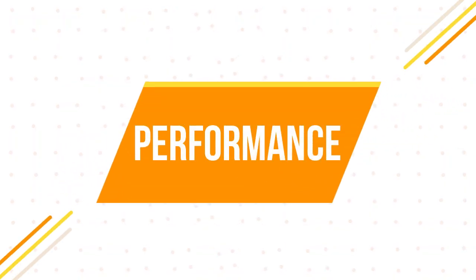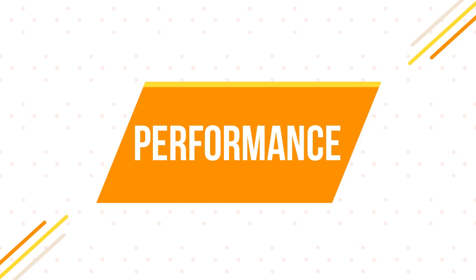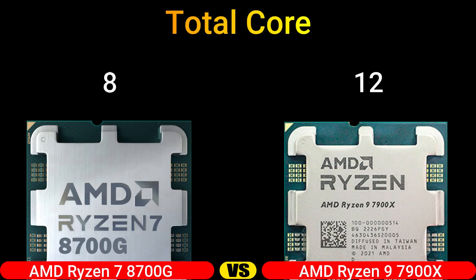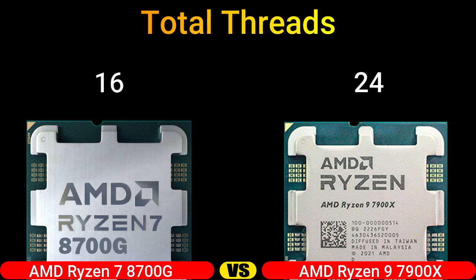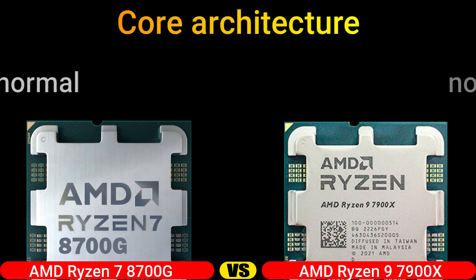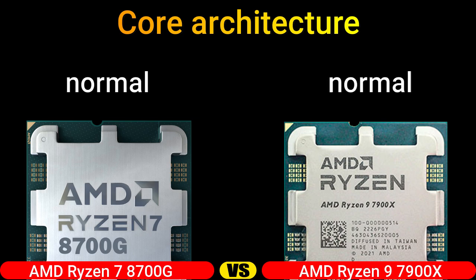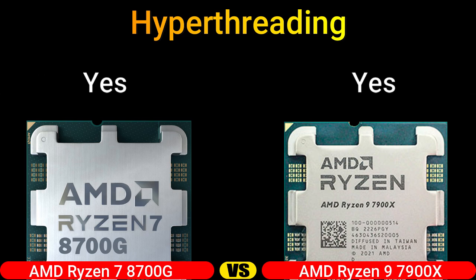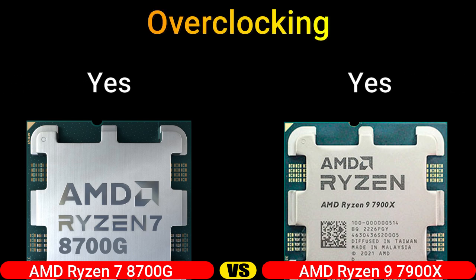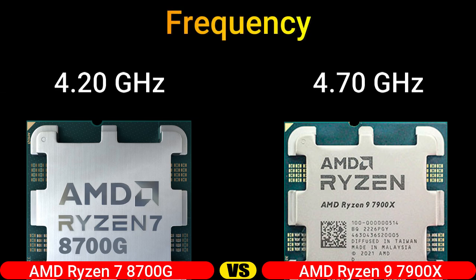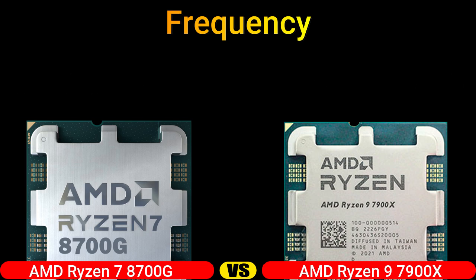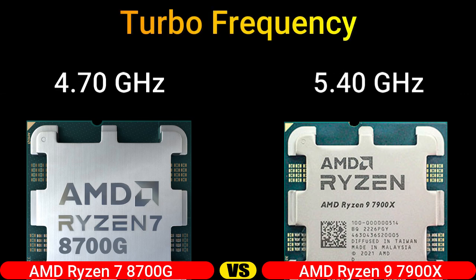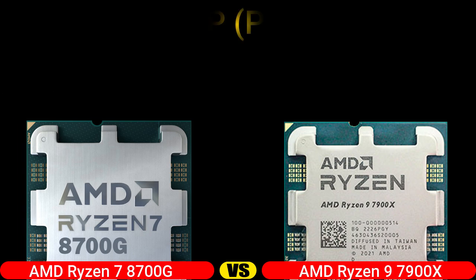Part two: performance. Total cores. Total threads. Core architecture. SMT threading. Overclocking. Frequency. Turbo frequency. TDP PL one.